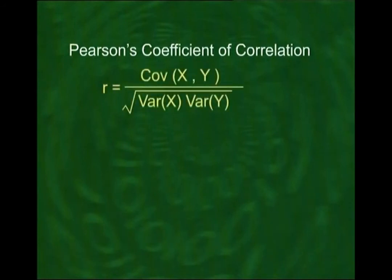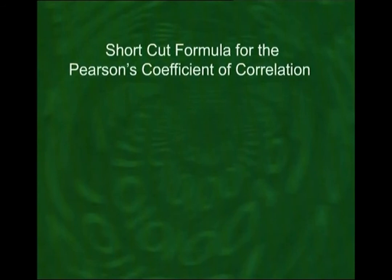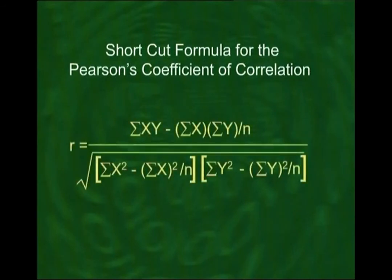We would like a numerical formula to measure the strength of the relationship between two variables. The correlation coefficient is defined as the covariance of X and Y divided by the standard deviation of X times the standard deviation of Y. Covariance of X and Y is defined as σ[(x − x̄)(y − ȳ)] / n — it is a measure of the degree to which two variables vary together. The shortcut formula for Pearson's coefficient of correlation r is: r = [σxy − (σx · σy)/n] / √{[σx² − (σx)²/n][σy² − (σy)²/n]}.